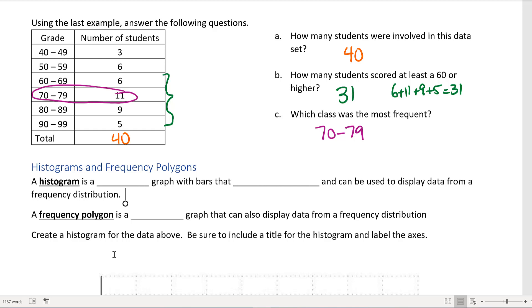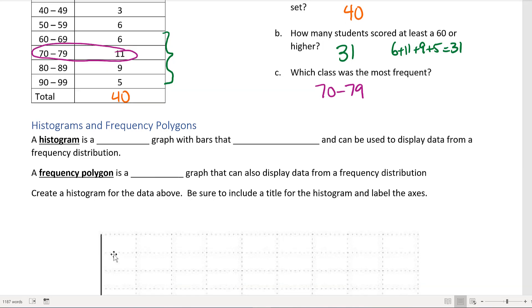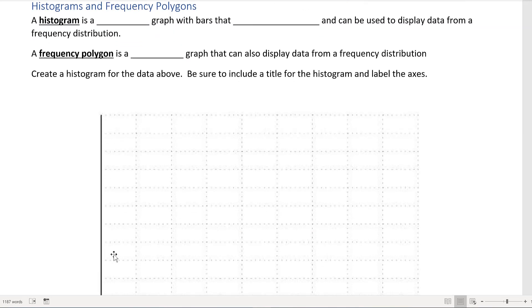Next we're going to take that frequency distribution and learn how to graph it using either the histogram or a frequency polygon. A histogram is a type of bar graph where they have bars that touch and can be used to display data from a frequency distribution. A frequency polygon is a line graph that can also display data from a frequency distribution.